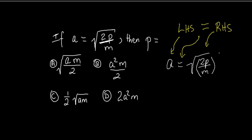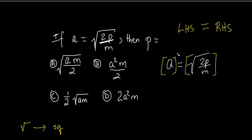We want to get rid of the square root first. How do you get rid of a square root? The reverse of square root is the square — square is the opposite of square root. So we're going to square the square root to get rid of it, and we do that to both sides. A gets squared, so we have A squared, and the square root is cancelled out by the square.